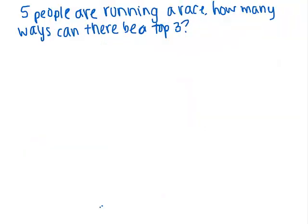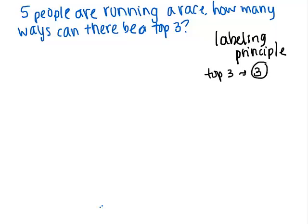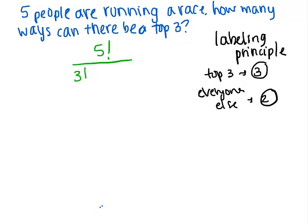Let's change this problem up yet again. You have five people running a race, and you want to know how many ways can there be a top three. In this case, we want to know who's in the top three, but the order in which they finish doesn't really matter. It's like a race where people are qualifying to move on — as long as they finish in the top three, they qualify. It doesn't matter if they're first, second, or third. Let's start by looking at the labeling principle. The labeling principle tells us we have two groups: the top three, which is three people, and everyone else, which is two people.